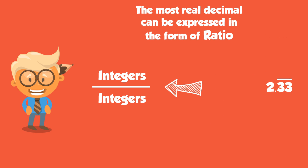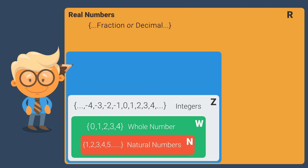Also, 2.33, where decimal 3 repeating forever can be expressed as 7 by 3. So, numbers that can be expressed as the ratio of integers, where the decimal terminates or repeats are called rational numbers.